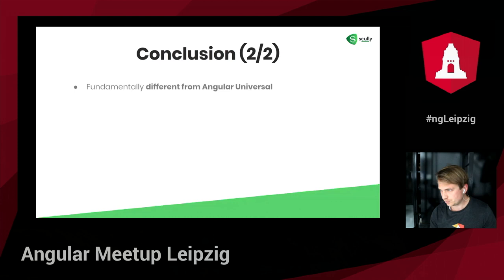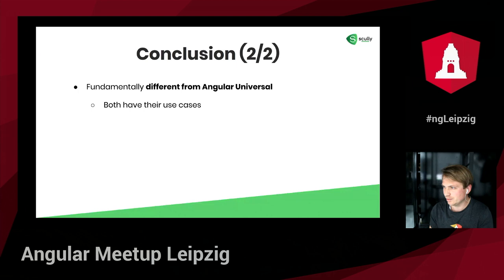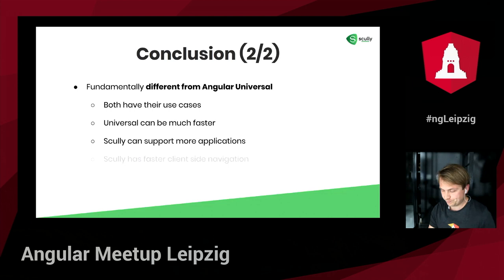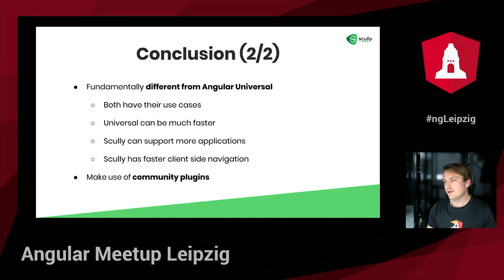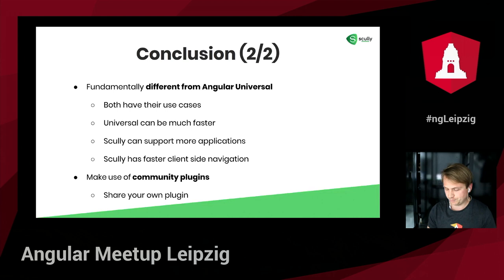Scully is fundamentally different from Angular Universal, but in its core they are very much alike — both have their use cases. Universal can be much faster on the contrary, while Scully can support many more applications and has faster client-side navigation. You can use the community plugins, and if you feel like sharing your own, please feel free to do so because it can be useful for others.